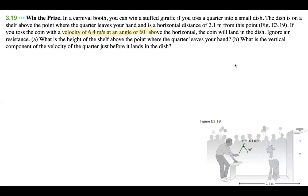at 60 degrees above the horizontal, and you can see that right here. So 60 degrees above the horizontal and that's 6.4 meters. It's a horizontal distance of 2.1 meters from this point and this point being where the quarter leaves your hand. So we can see that right over here, that's 2.1 meters, and we want to find out what this distance, this vertical height distance is.